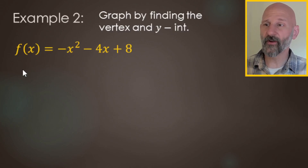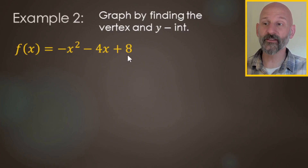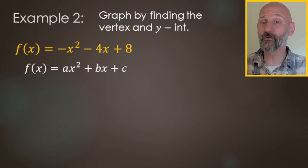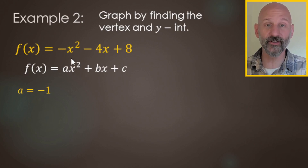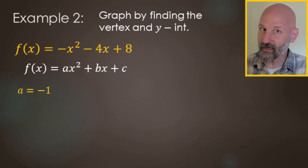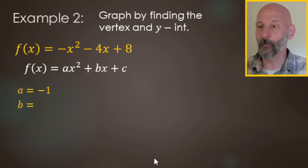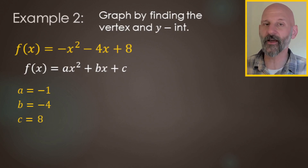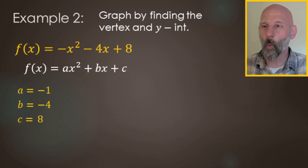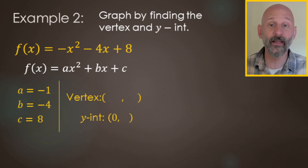Now we're going to graph f(x) = −x² − 4x + 8. This follows the general form ax² + bx + c. For 'a': there's a negative 1x², so a = −1. For b, what replaces the b value: that's −4. And for c, the constant term: that's 8.